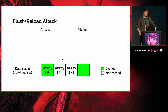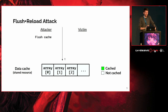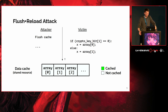It's kind of simple in the end. Here we have an example where we have an attacker and a victim sharing a common resource — for example, an array. The first step is to bring the shared resource into a known state, for example by flushing the entire cache, so we know that every entry of the array is not present in the cache. Later, the victim will access some array entries depending on a secret bit. Let's say the secret key bit is one, so we're accessing entry one.